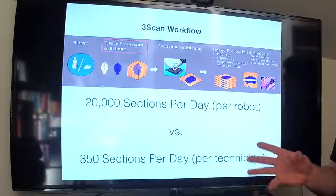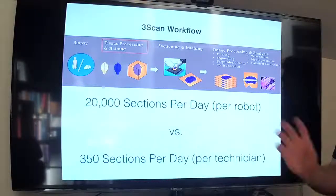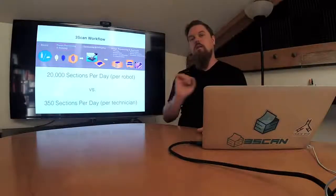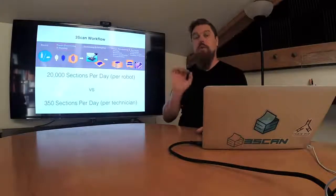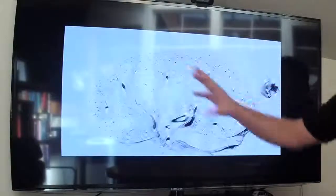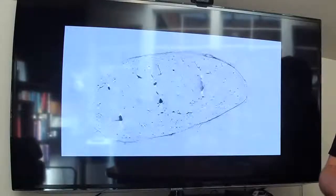So at this point, you probably want to see what some of the data looks like. So what I'm going to show you next is a mouse kidney where we have stained the kidney for blood vessels. And so what we're doing right now is we are flying through the sample. In black, those blobs, those are the glomeruli, which are the functional work units of the kidney. One of the things that you'll notice is that the features line up in 3D.